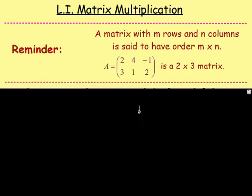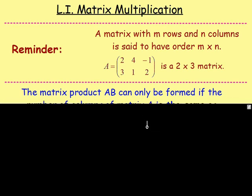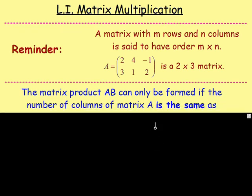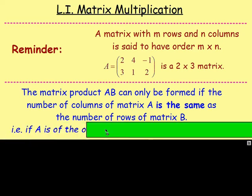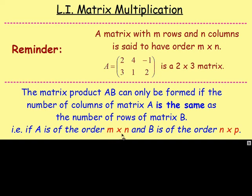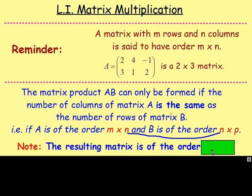A matrix product AB can only be formed if the number of columns of matrix A — in this case it would be 3 because there are 3 columns — has to be the same as the number of rows of matrix B. So if A is of the order M by N, then matrix B, in order to multiply A and B together, would have to be of the order N by P. These two numbers would have to be equal, and the resulting matrix will be of order M by P.